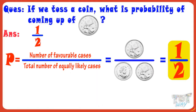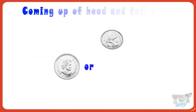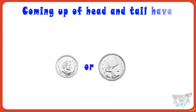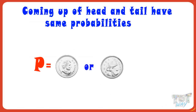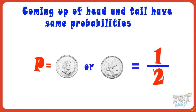We also learned here that coming up of the head and tail have the same probabilities. Both have probabilities 1 by 2. Now, let's take another example.